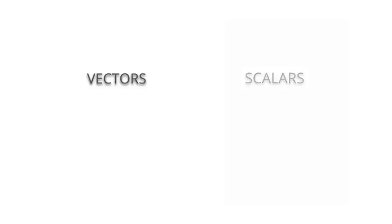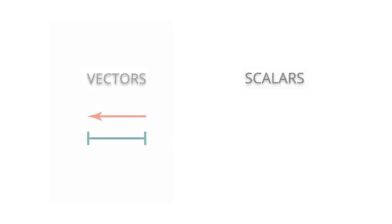Here we will learn to distinguish between vectors and scalars. Vectors are objects that have both a magnitude, a single number, and a direction, whereas scalars have only a magnitude.